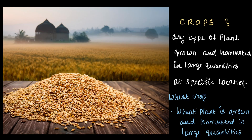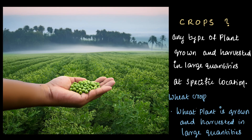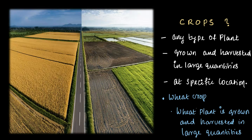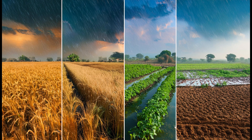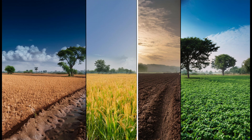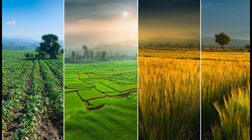Barley is a crop, green peas is a crop, because these are plants that are grown and harvested in large quantities at specific locations. India, being a diverse agricultural country with different climatic conditions — like temperature, rainfall, and humidity — gives us the perfect setup to grow a variety of crops.